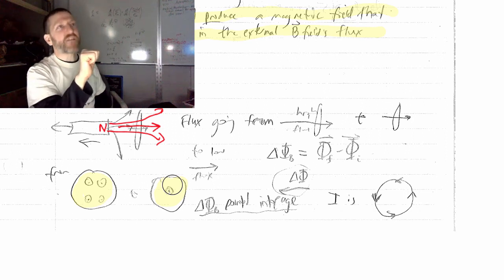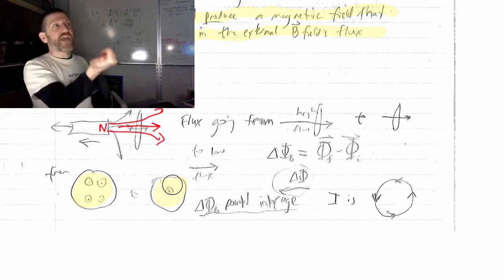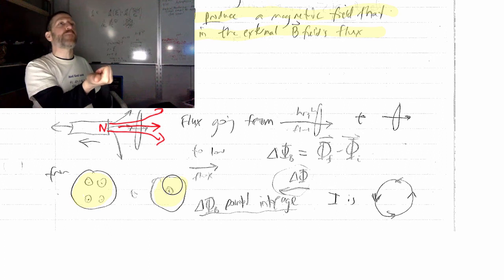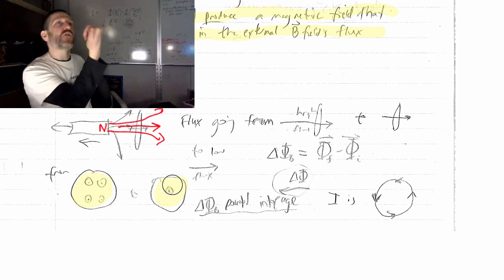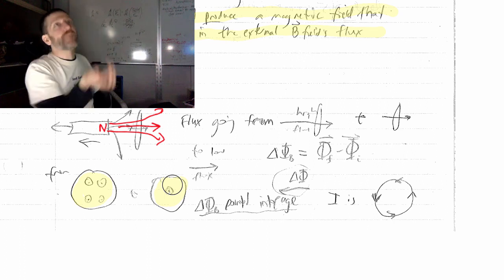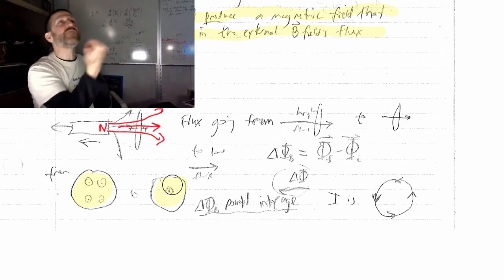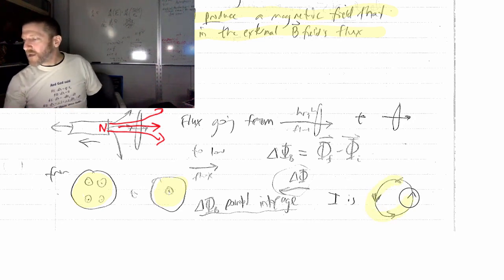Nature doesn't like a change in flux any more than it likes a change in velocity. So, it will oppose that change, and that's the important flip. That's the negative in the negative dΦ_b/dt. You oppose it, and then you can use your coil right-hand rule to figure out, hey, which way would current have to flow to get that magnetic flux that we want to impose on that to keep the change minimized? So, it would have to be counter-clockwise in that example.